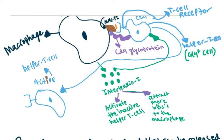Interleukin-1 is an example of a pyrogen. So interleukin-1 is going to be released from the macrophage. We said it can do two important things, like activate the inactive helper T cell.